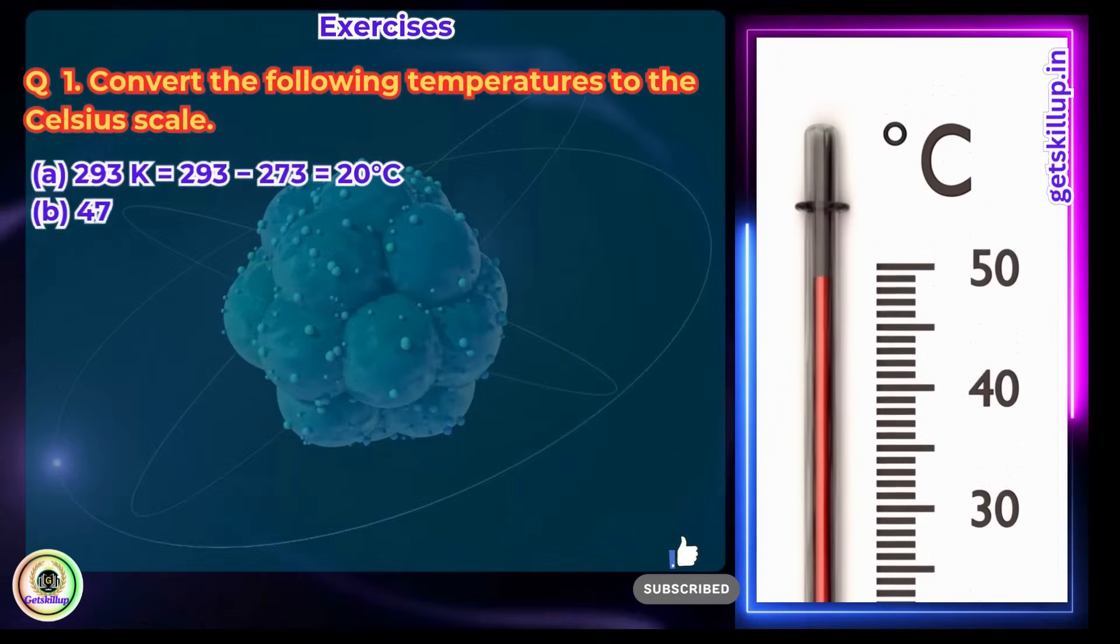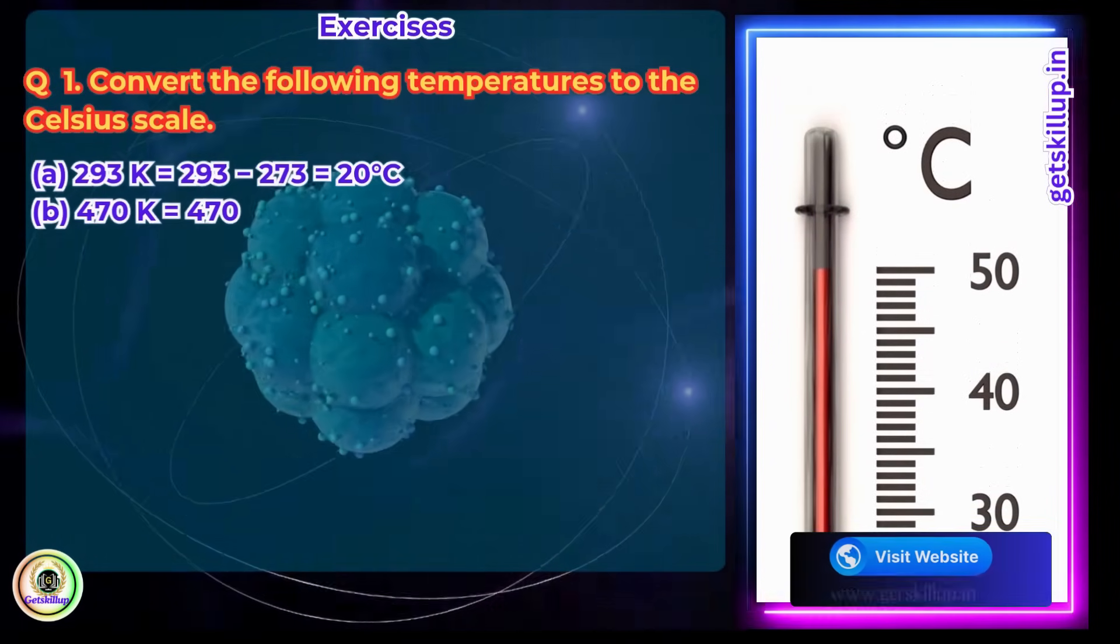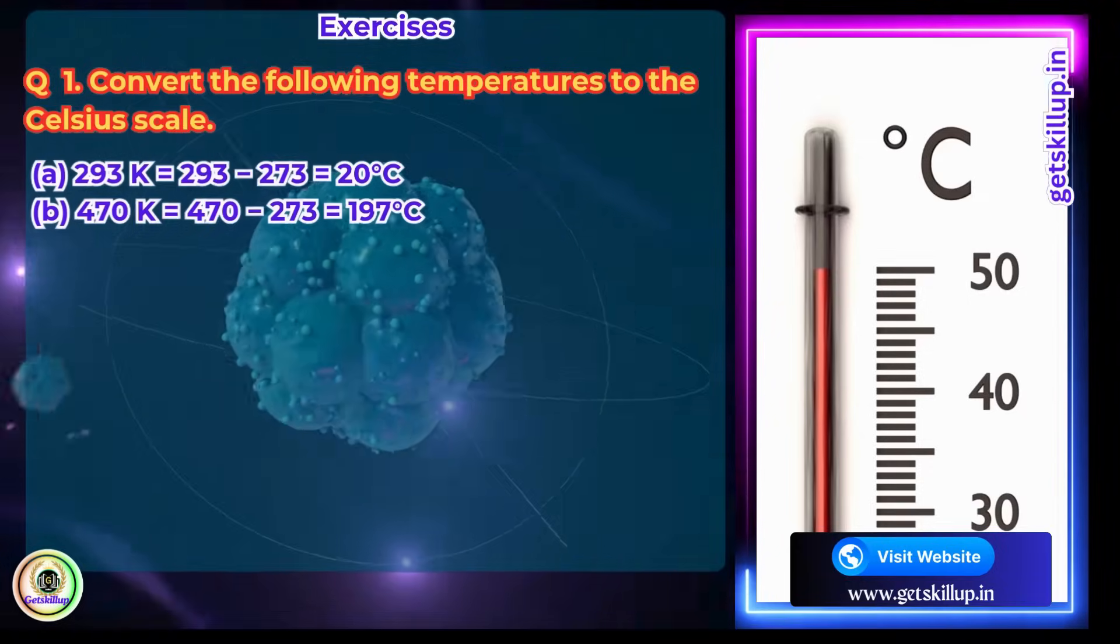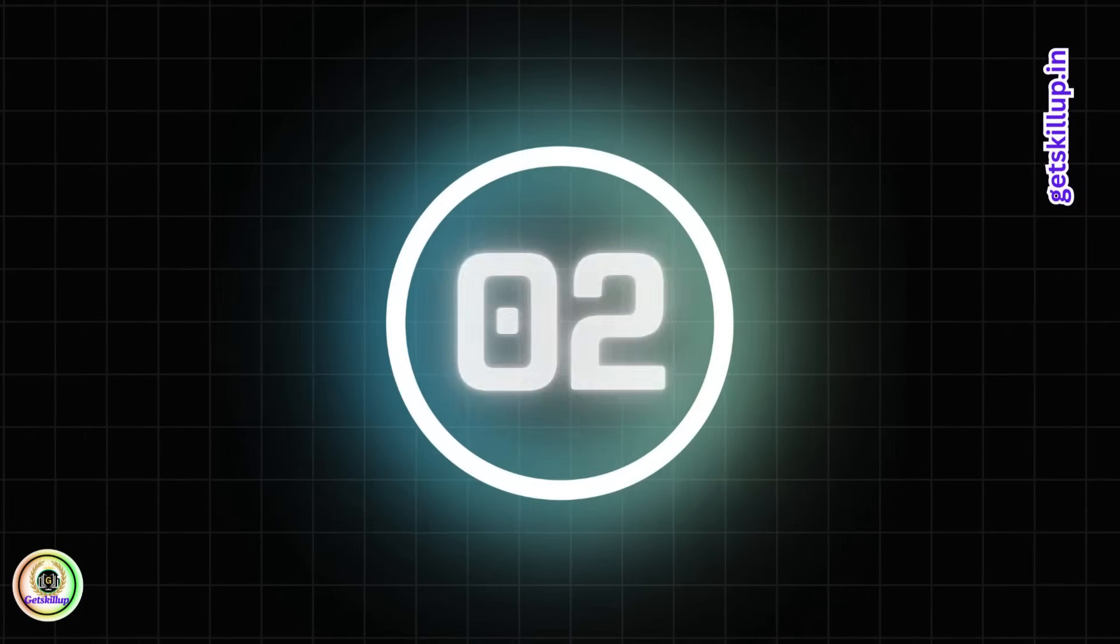b. 470K. Answer: 470K equals 470 minus 273, which is equal to 197 degrees Celsius.